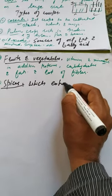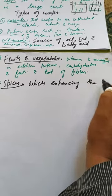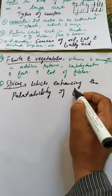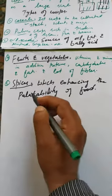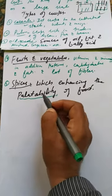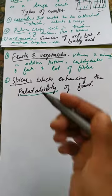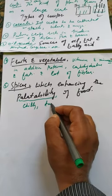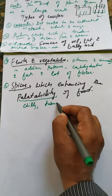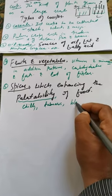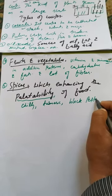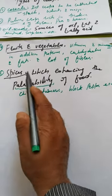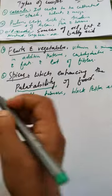The fifth type is spices. Spices are those crops which enhance the palatability of food — that means they increase the taste of the food. We use spices in order to increase the taste of food. Examples include chili, turmeric, black pepper, etc. So spices are those crops which increase the palatability and taste of our food.